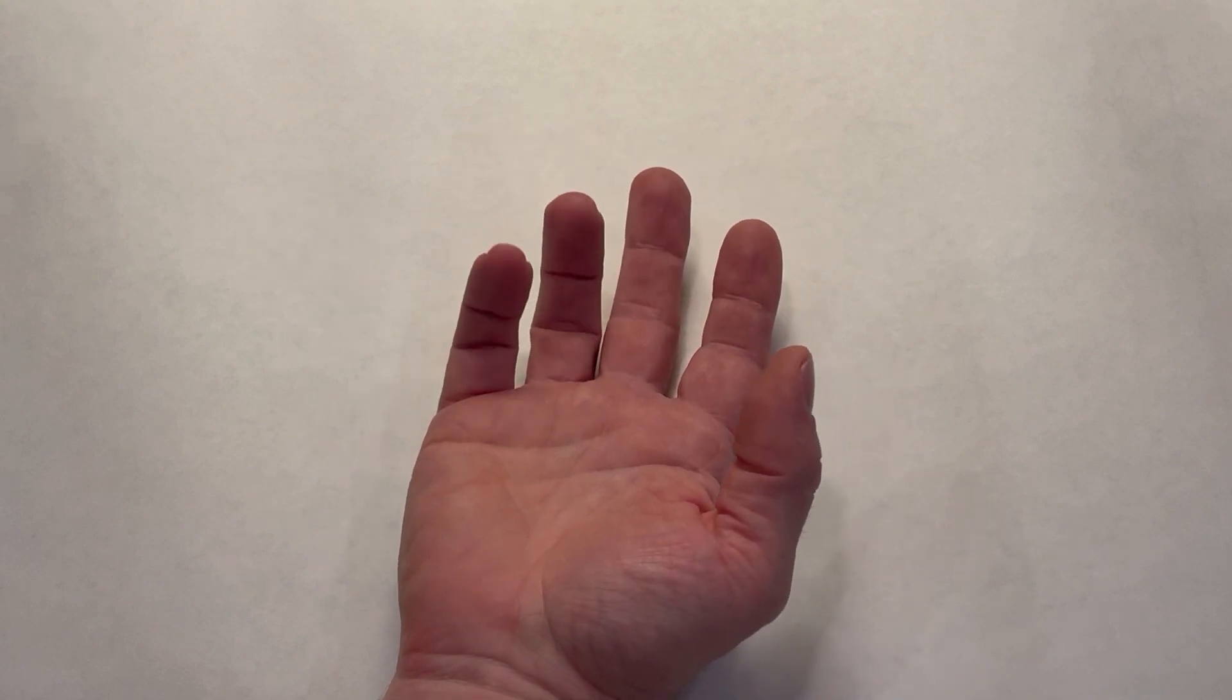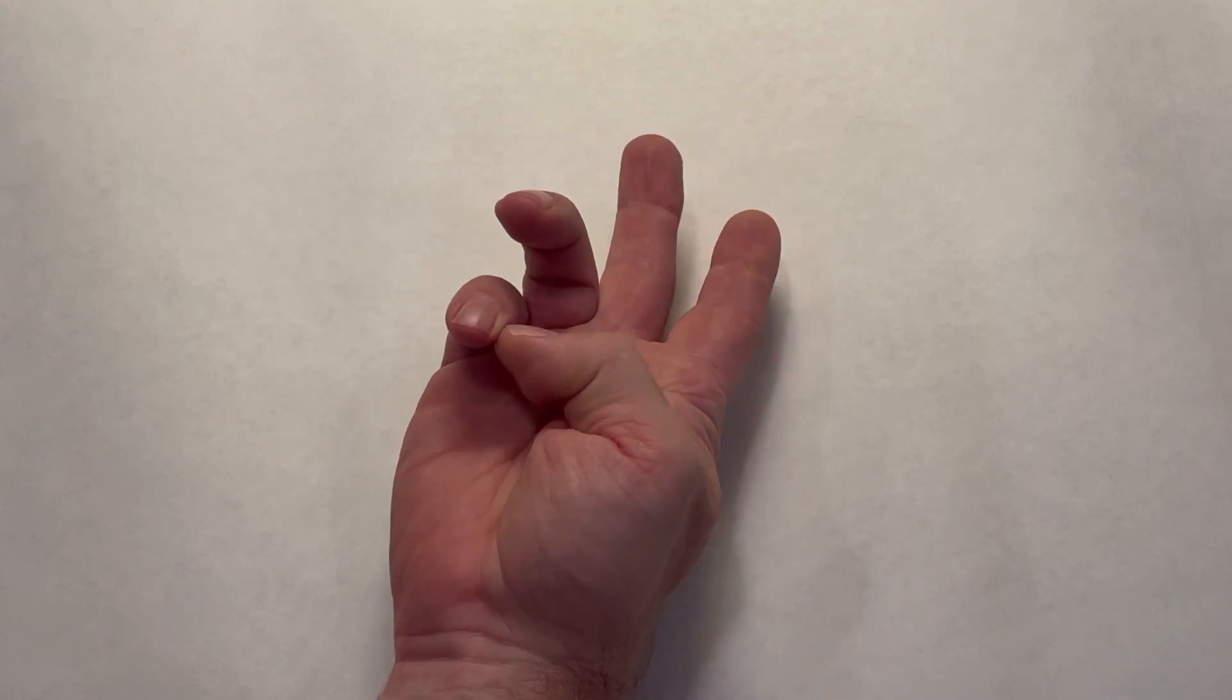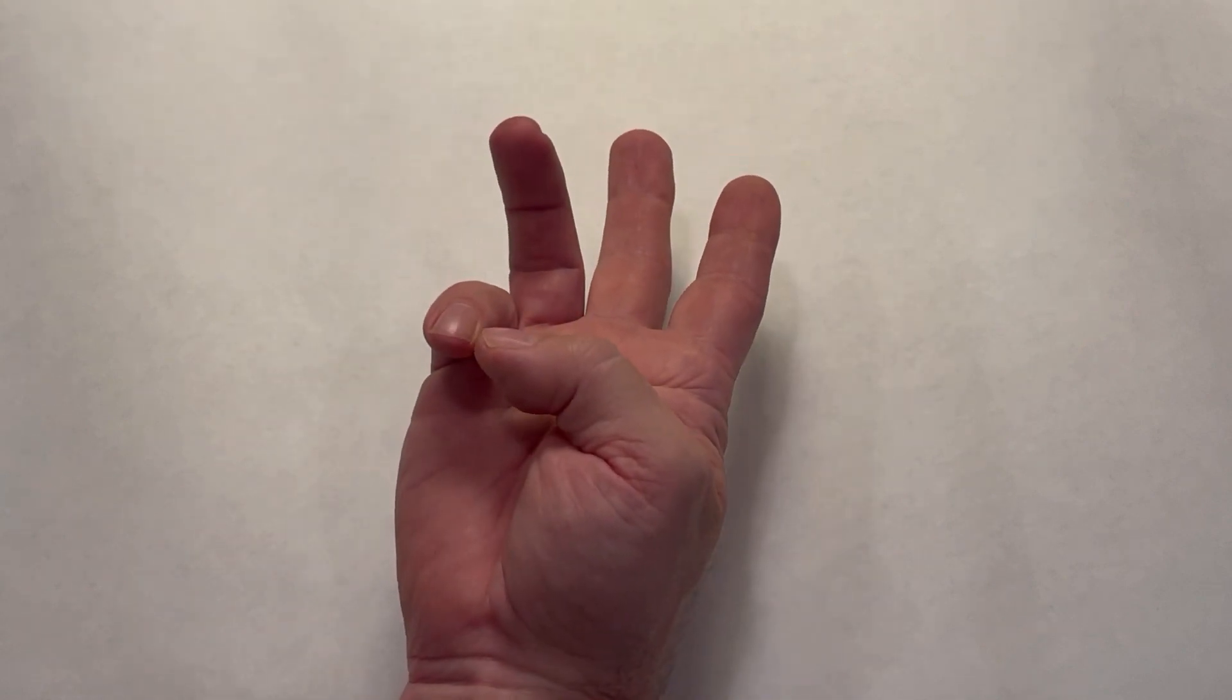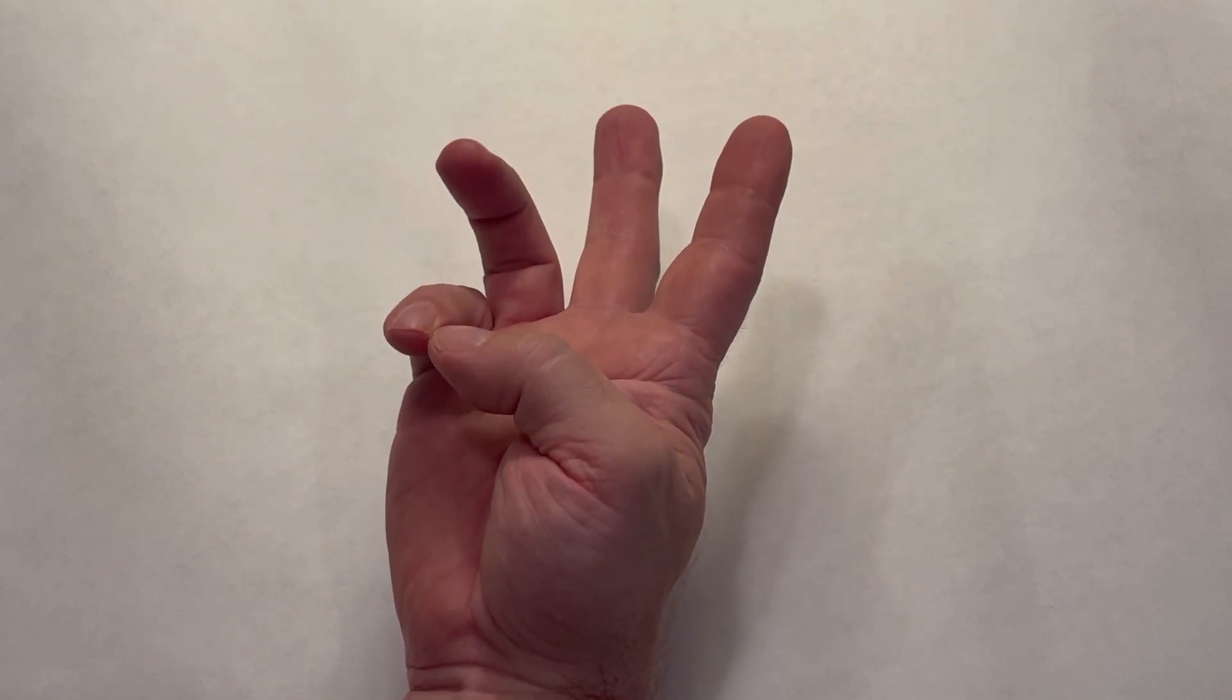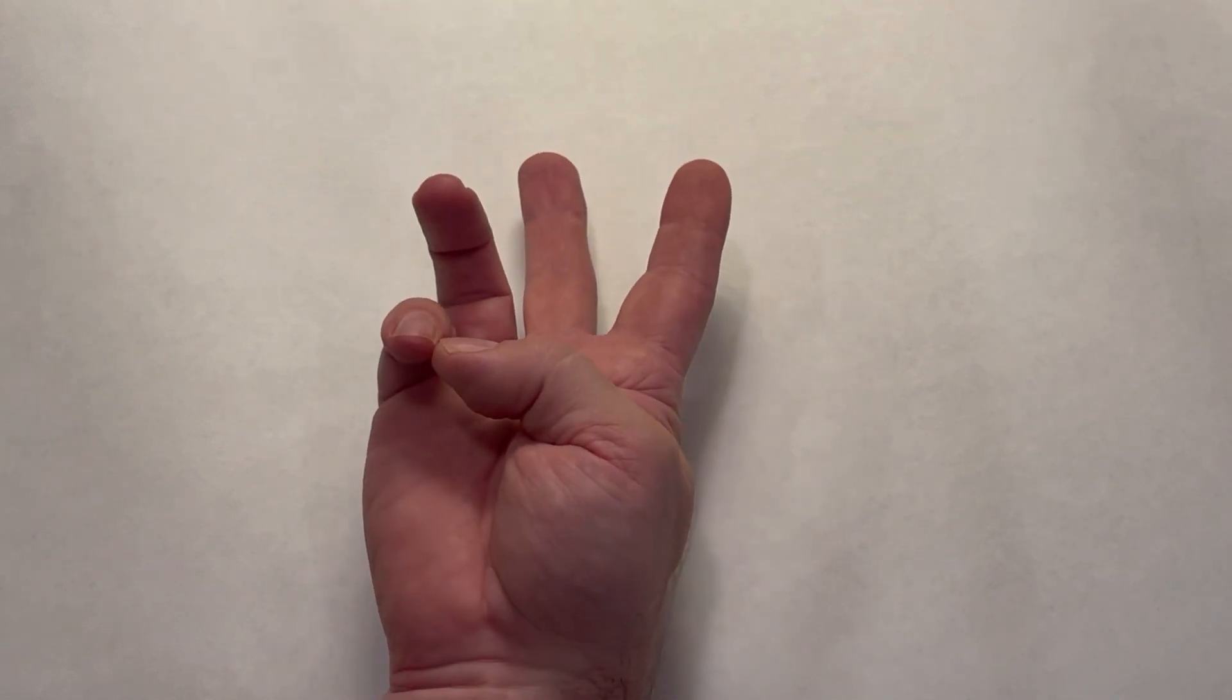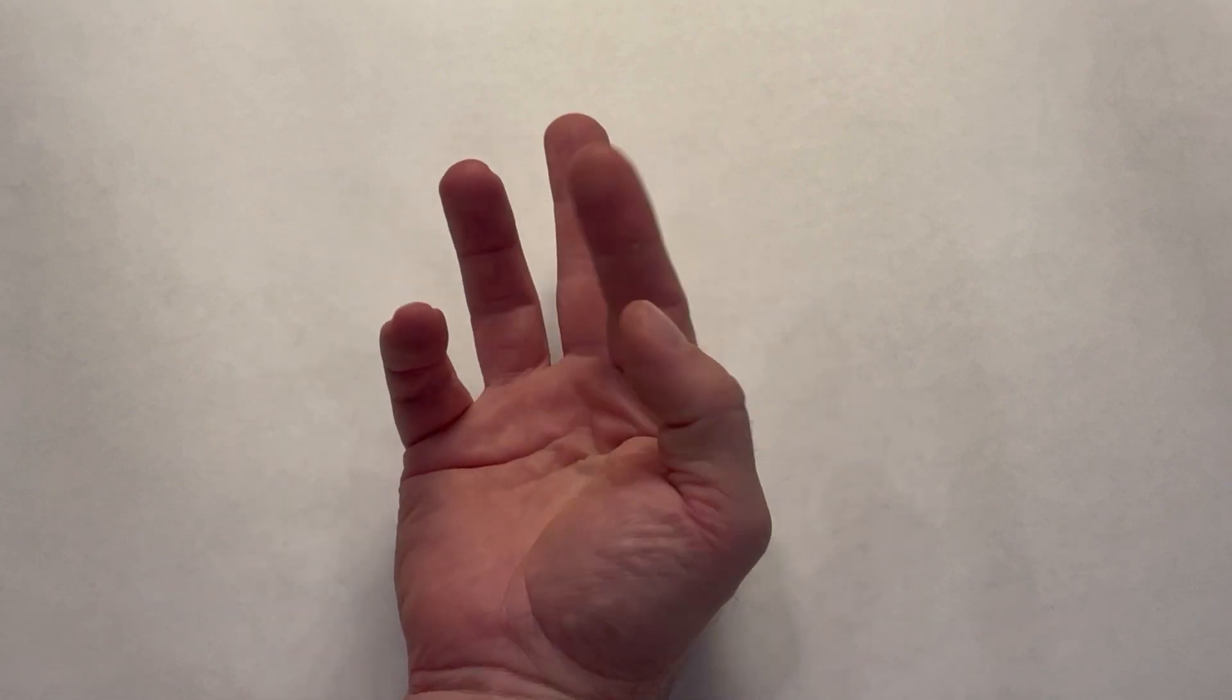If the person simply flexes at the thumb CMC joint, you will see that the thumb tip goes to the side of the small finger distal phalanx. This is not opposition. You can see there's really no abduction and no pronation of the thumb metacarpal. So this would not be considered a stage 6. In fact, if this is all the client can do, they're probably more in one of the first stages.